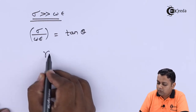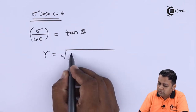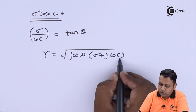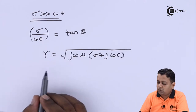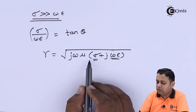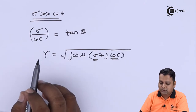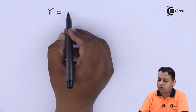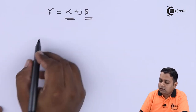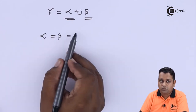For propagation in such a medium, the propagation constant gamma (γ) is given by the generalized equation: γ = √(jωμ(σ + jωε)). Since σ >> ωε for a good conductor, this simplifies accordingly. The propagation constant γ equals alpha plus j-beta (α + jβ), where alpha is the attenuation constant (real part) and beta is the phase shift constant (imaginary part).